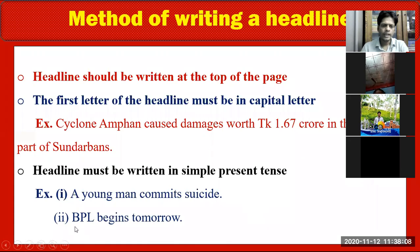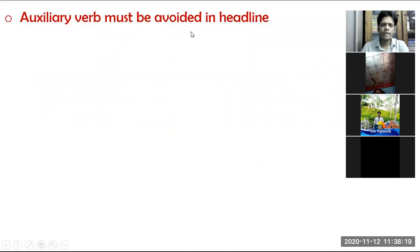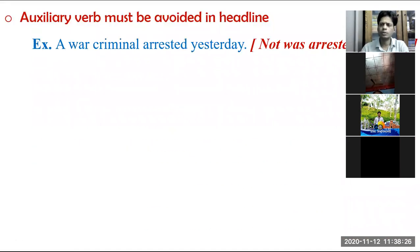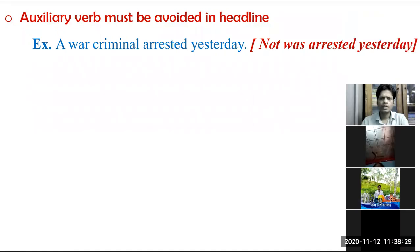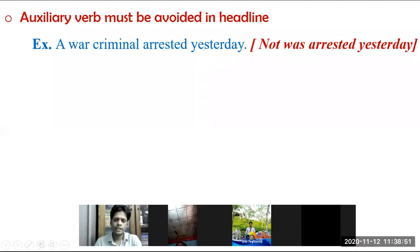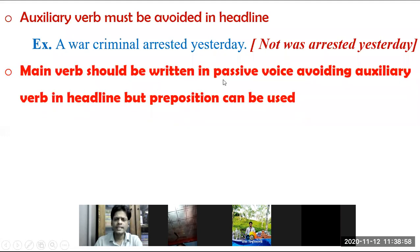For future events, use a present-tense structure — for example, 'BPL begins tomorrow.' Auxiliary verbs must be avoided in headlines. For example, instead of writing 'A war criminal was arrested yesterday,' you write 'War criminal arrested yesterday' — drop the auxiliary 'was.'